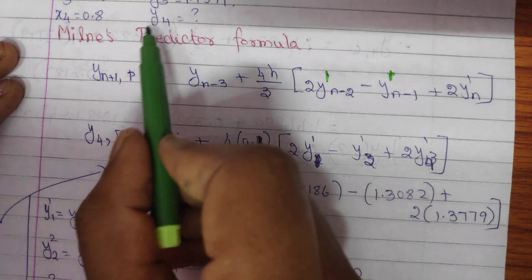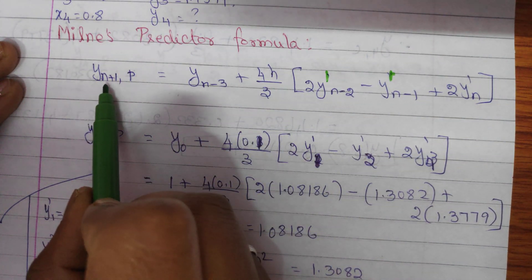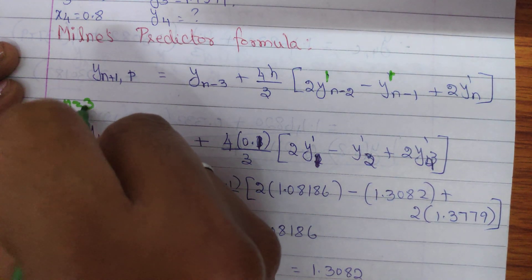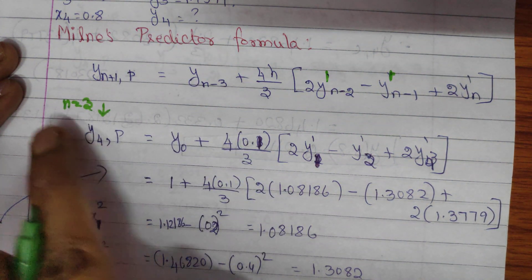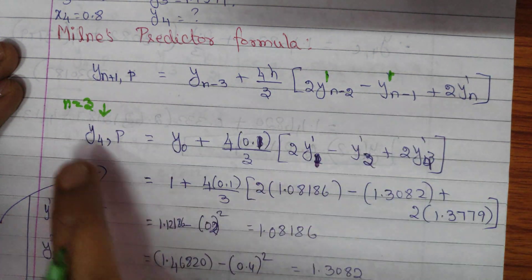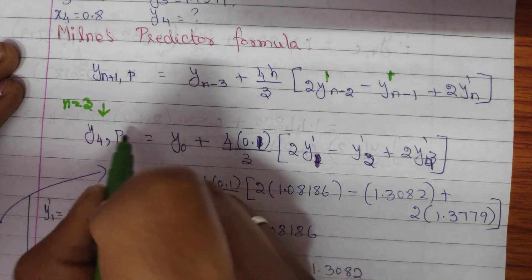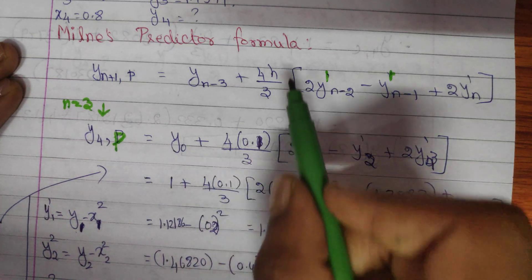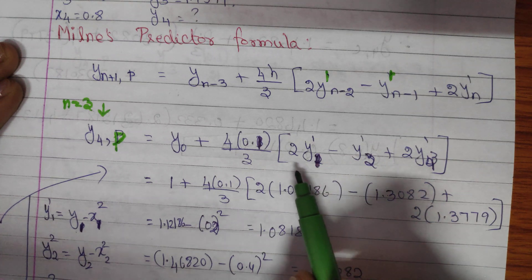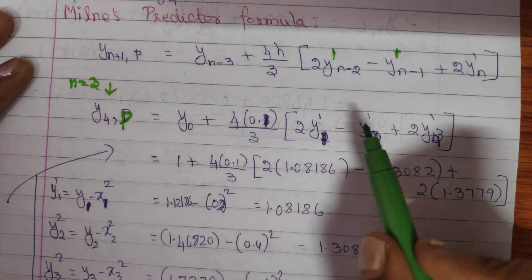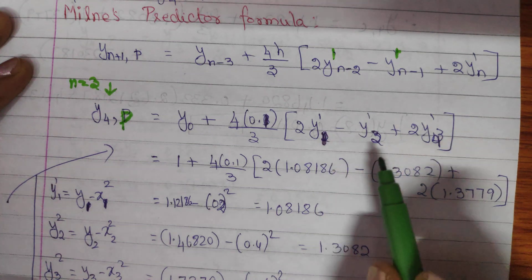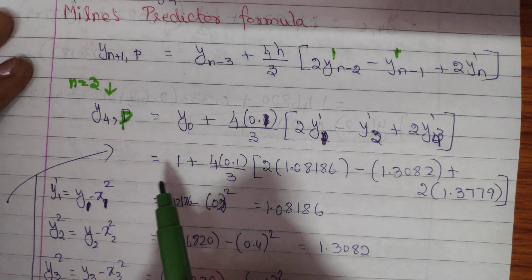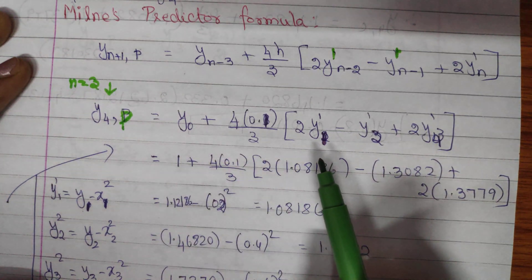To find y4, we need n equal to 3, which makes y(n+1) equal to y4. Substituting n equal to 3 into the formula: y(4,p) equal to y0 plus (4 times h, where h is 0.2, divided by 3) into [2y1' minus y2' plus 2y3']. We know y0, but we do not know y1', y2', and y3', so we have to calculate them.